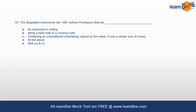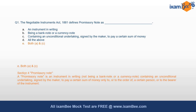Starting off with the NI Act, the first question is: the Negotiable Instruments Act 1881 defines promissory note as — what is the definition given of the promissory note? The answer is both A and C. As per Section 4, the definition of promissory note includes an instrument which is in writing and which contains an unconditional undertaking with respect to the payment of a certain sum of money.